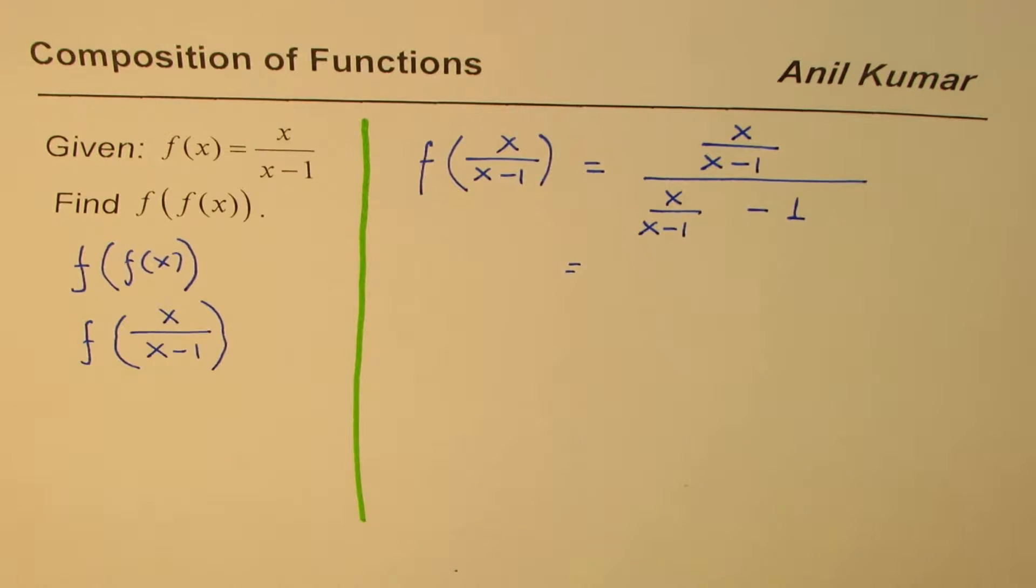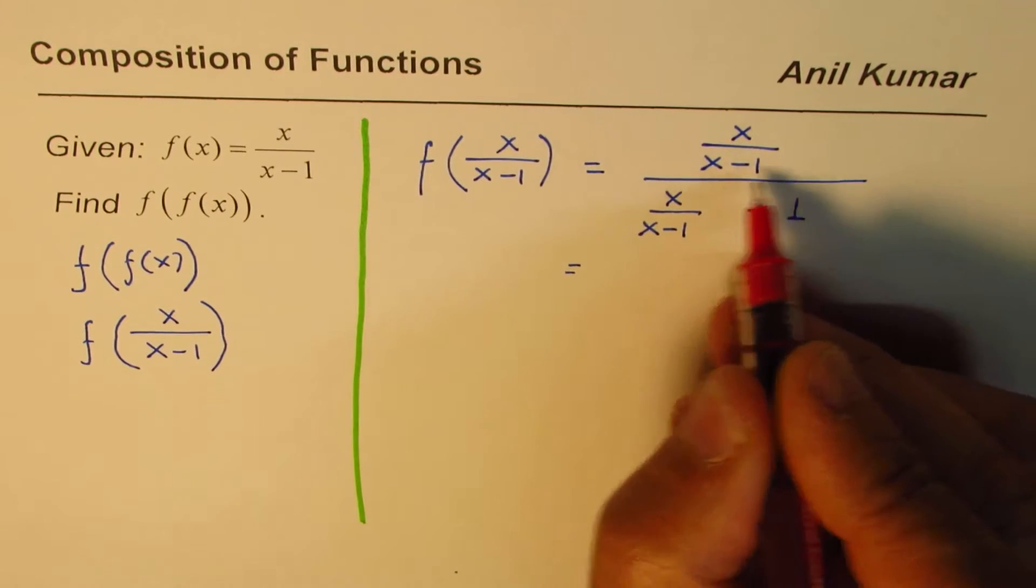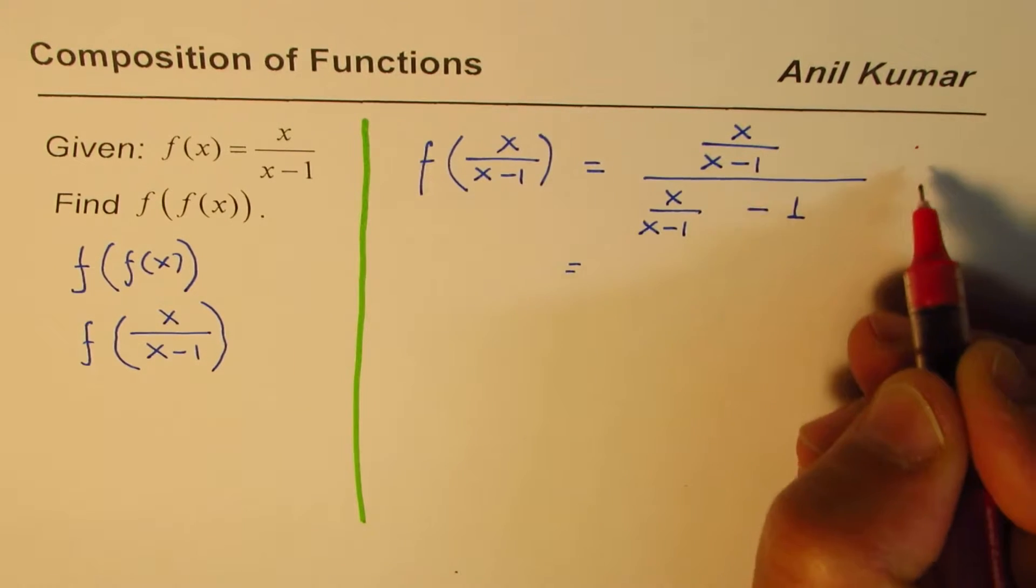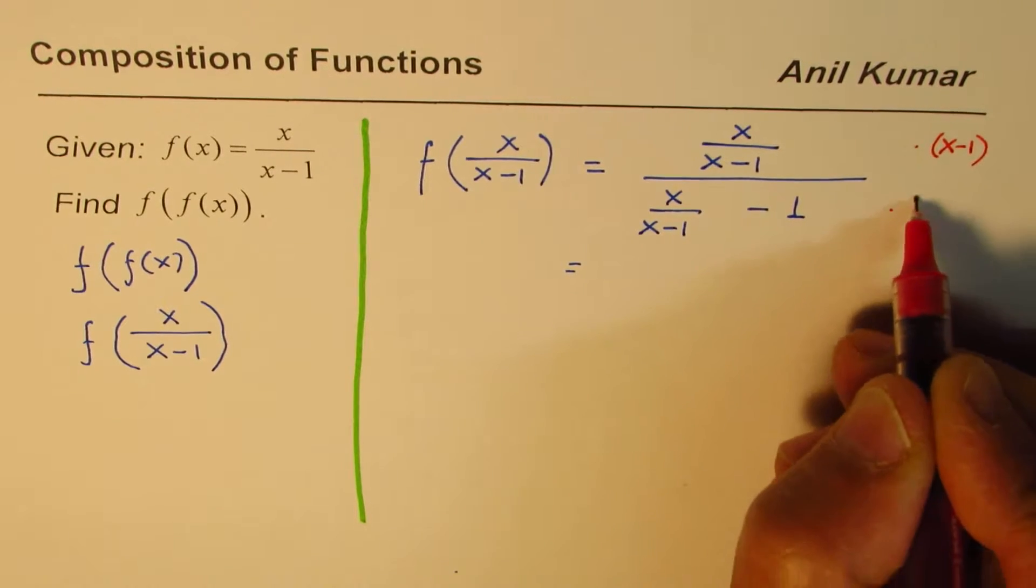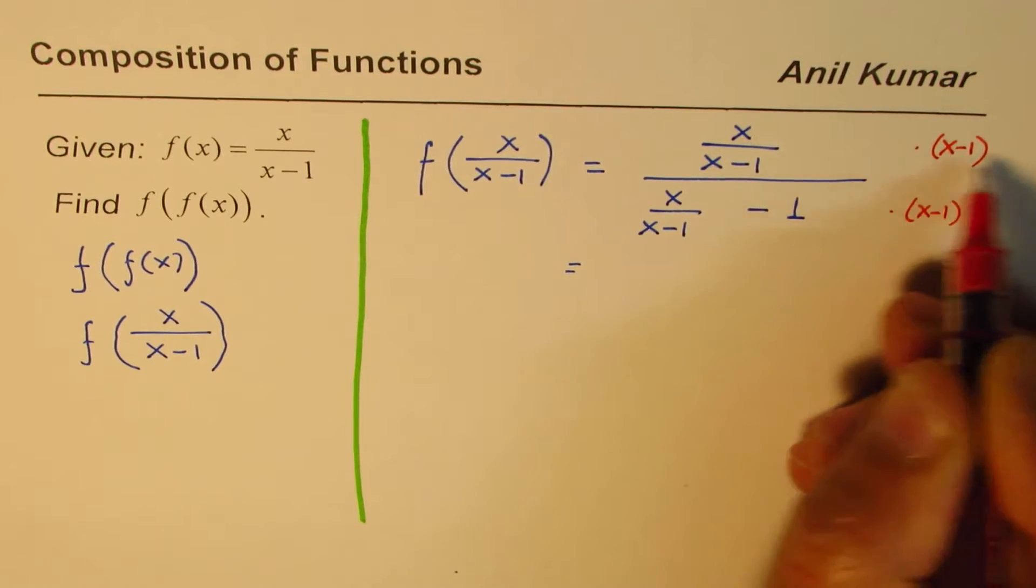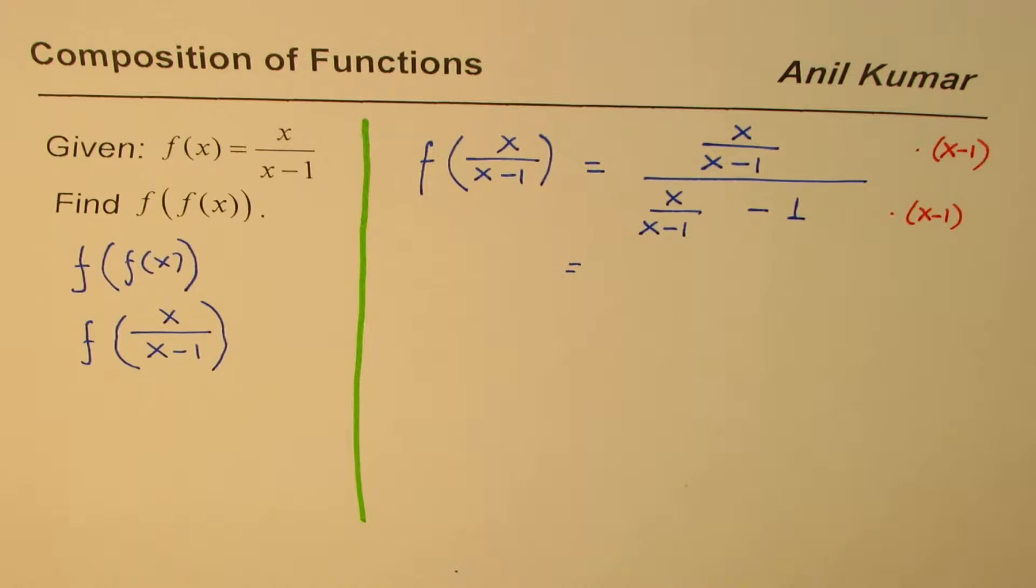One way which I like is to get rid of fractions. That is to say, I'll multiply both numerator and denominator by x minus 1. So we are multiplying by 1 in a way.